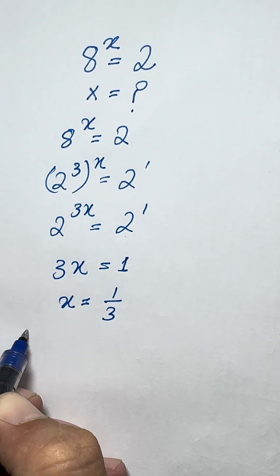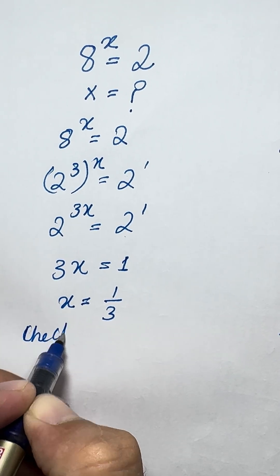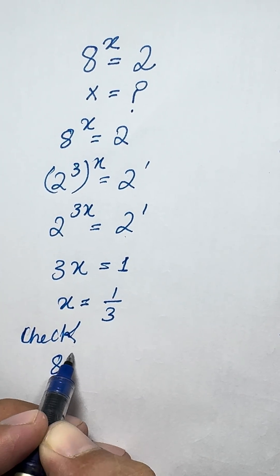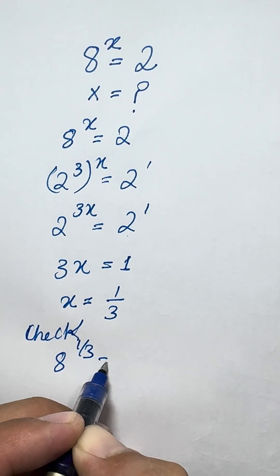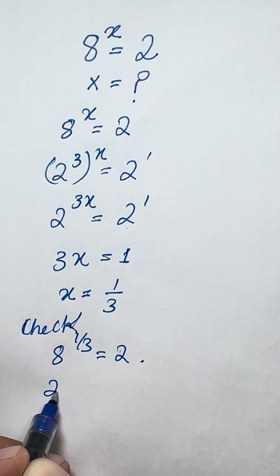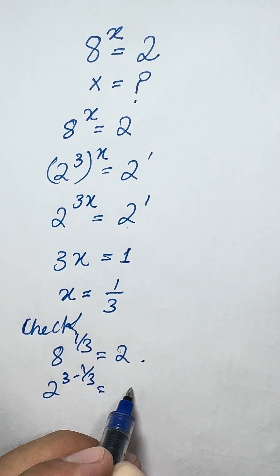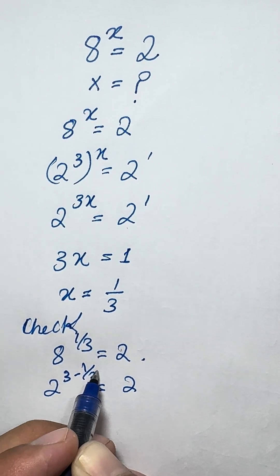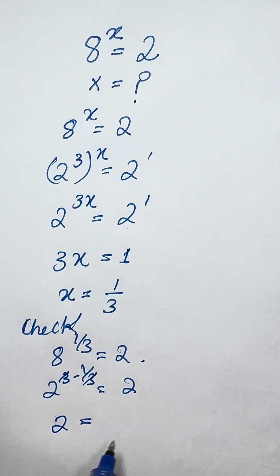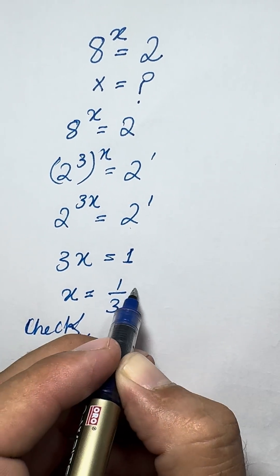Check: 8 to the power 1/3 equals 2. We rewrite as 2 to the power 3 times 1/3, which equals 2 to the power 1. The 3s cancel, giving 2 equals 2. This confirms that X equals 1/3 is correct.